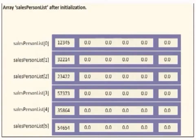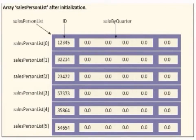The first step of the program is to read the salesperson's IDs into the array salesperson list and initialize the quarterly sales and total sales for each salesperson to 0. After this step, the array salesperson list will look like this.